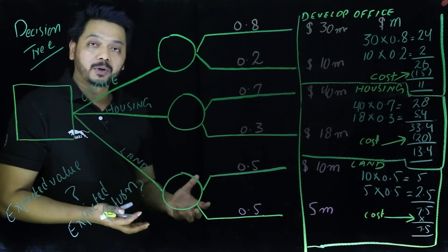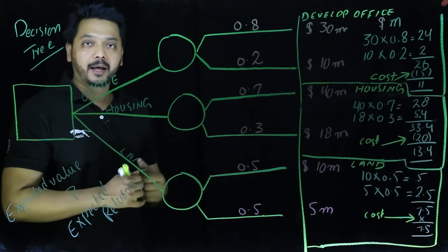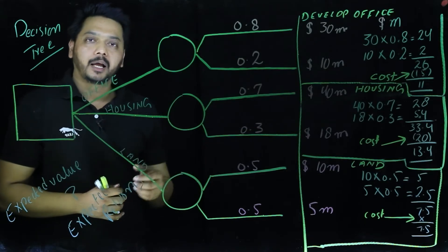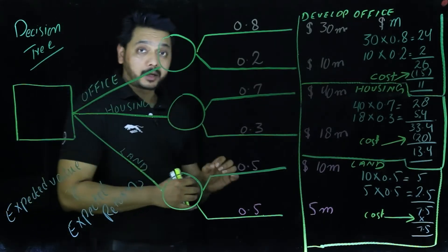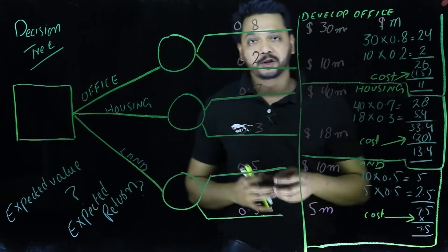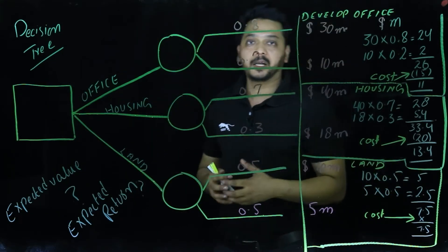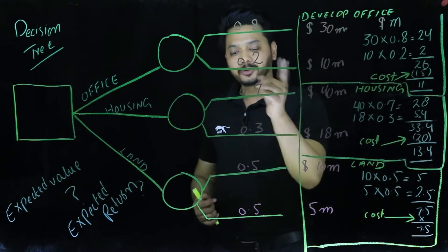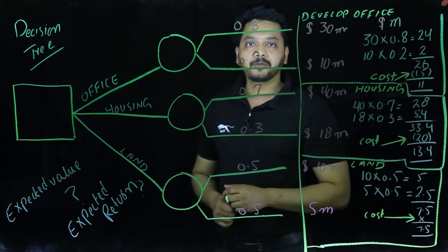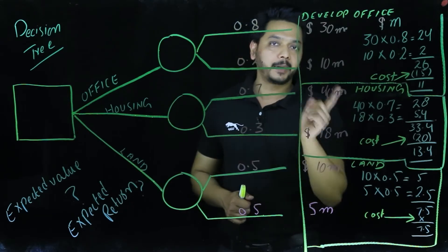They have a choice to make. Maybe they can come up with the housing project for the flats, and then they may sell the land after three years. As per the market information provided to us by the experts that we have, the source of information that we get for the probability and for the expected value would be from the experts.